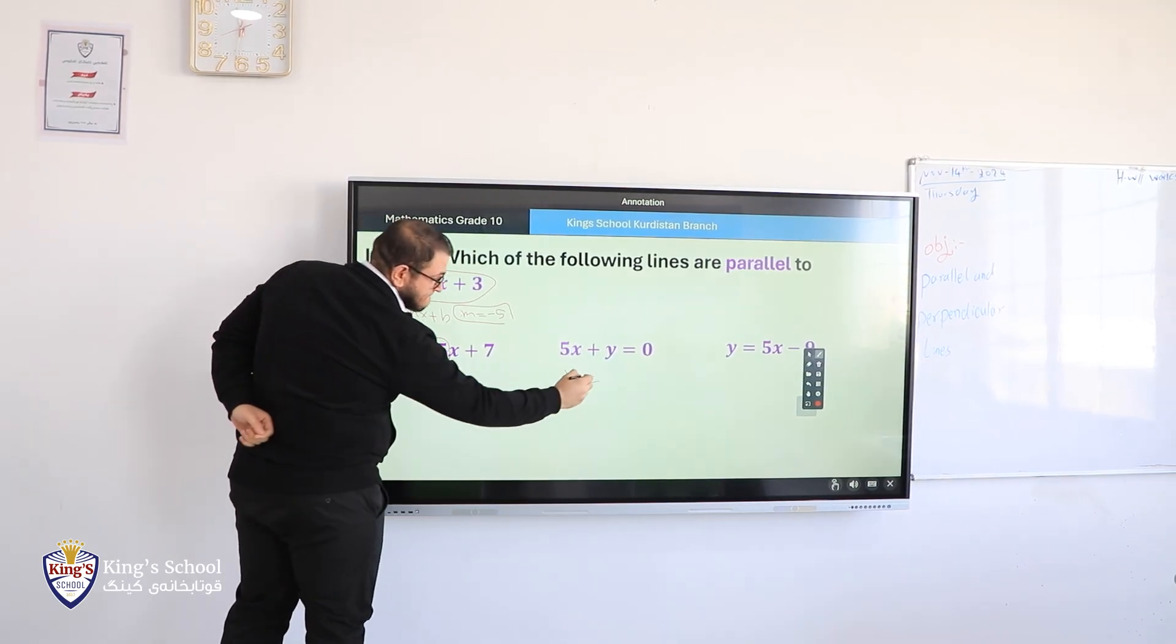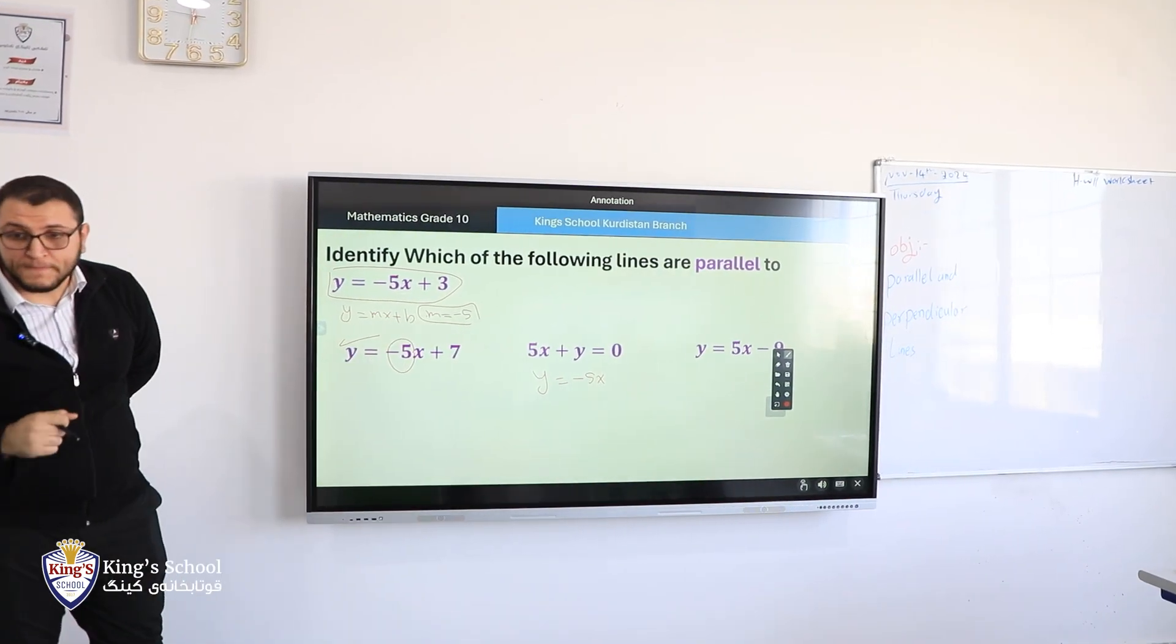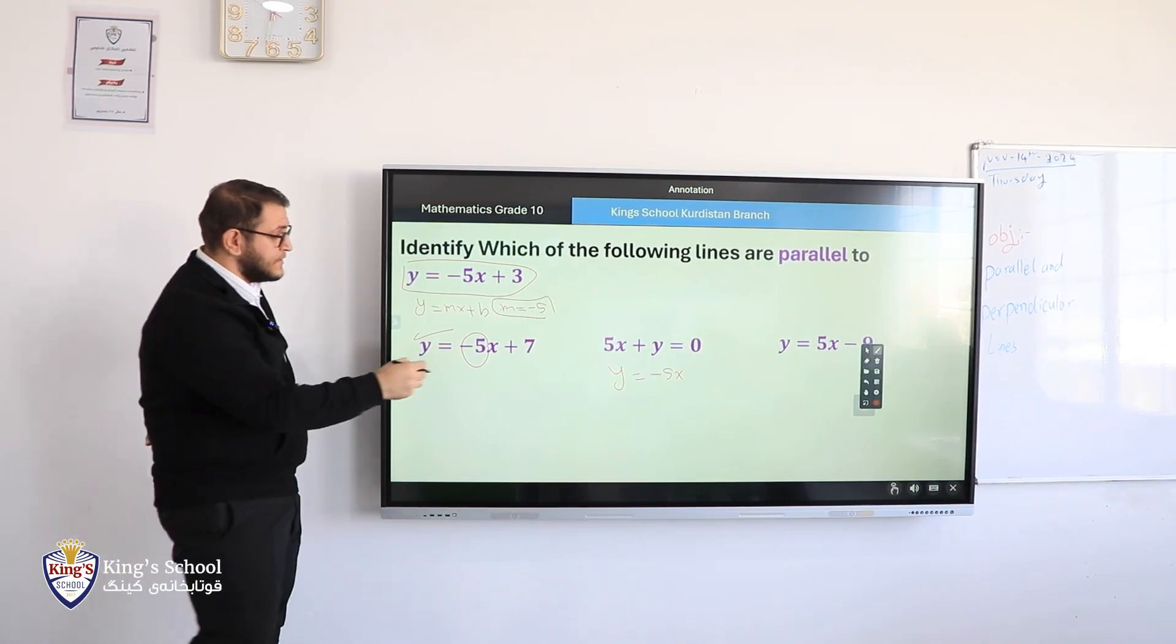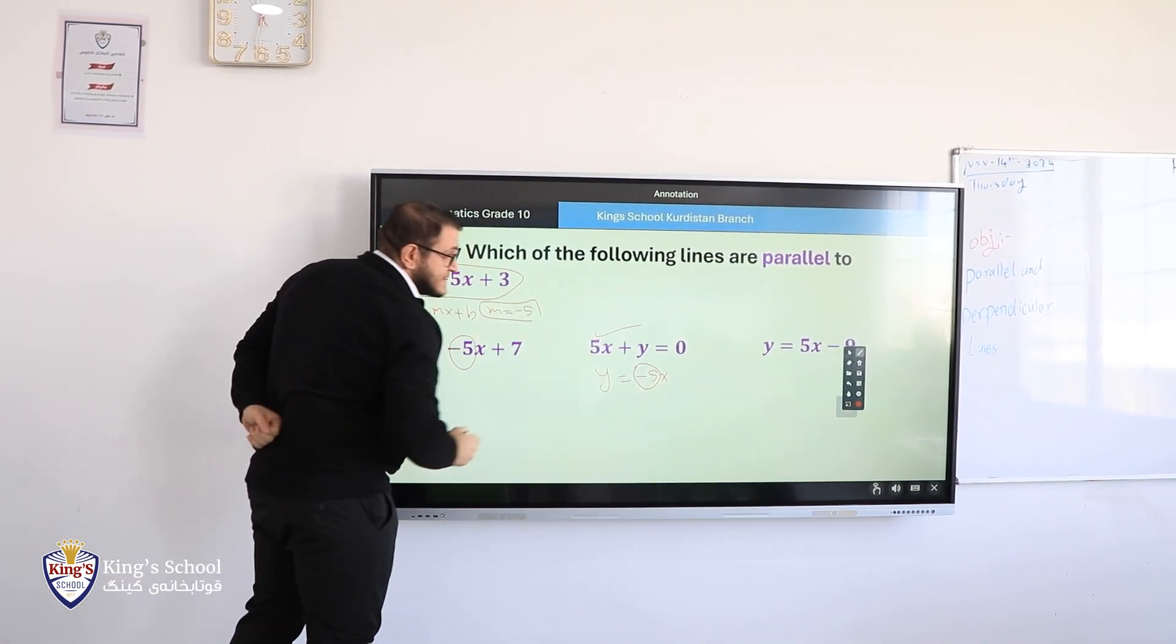Negative 5x. So plus 0 equals same. Yes. Right now? So the slope is still negative 5, so this is parallel. So this equation also, this line, also parallel, because they have the same slope.